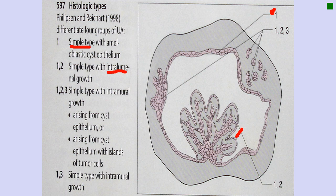The third type, the intramural type, has all the features of the other two types. It has a lining epithelium, may have intraluminal extension, and — most importantly — it has growth of the epithelial lining inside the wall of the cyst. It arises from the cyst lining and grows into the cyst wall. That is how type 3 differs from types 1 and 2.